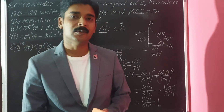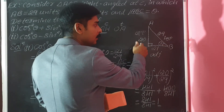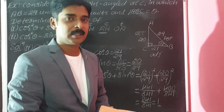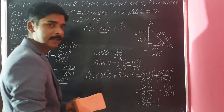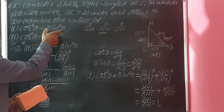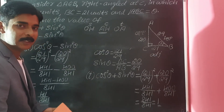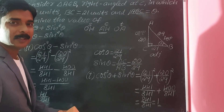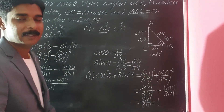This is the second variety of problem. Sometimes instead of giving the sides directly, they may give the value of any one trigonometric ratio. Whichever way the data is given, first find all the sides of the right angle triangle. After that, identify what is required — whether it's cos theta, sin theta, tan theta, secant, or cosecant — find those values, substitute them, and simplify to get the final answer.